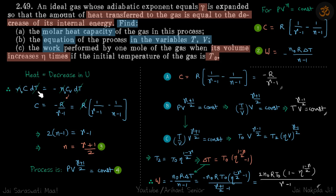Heat is given as nCdT where C is the molar heat capacity, and decrease in internal energy is -nCvdT. We know Cv = R/(γ-1), so this gives the value of C to be -R/(γ-1). We will equate it to the C of a polytropic process to get the value of n.